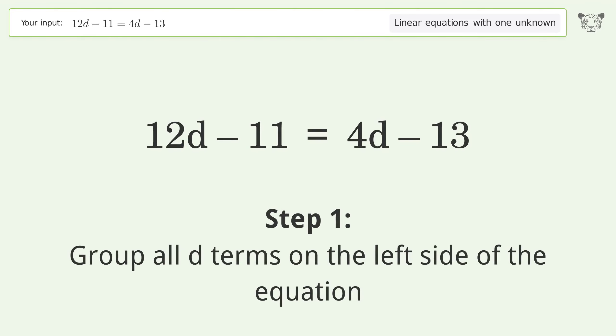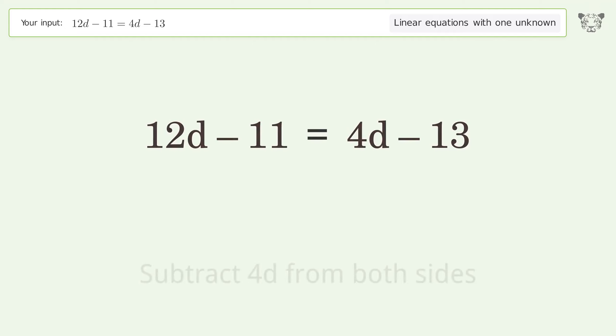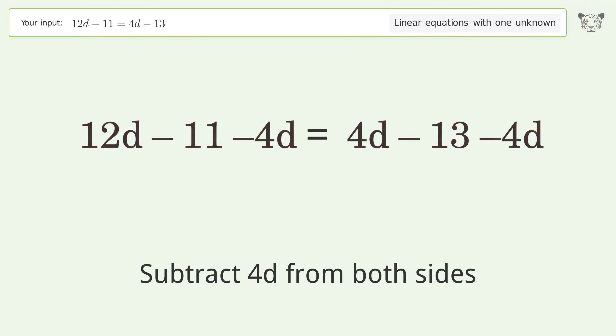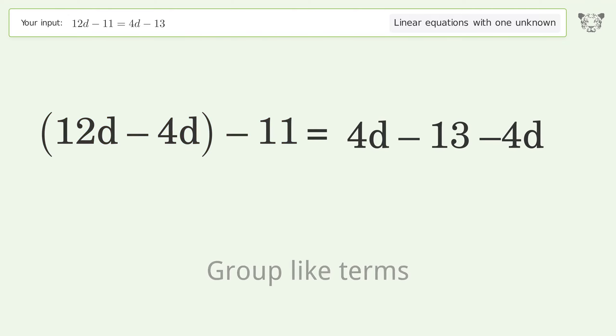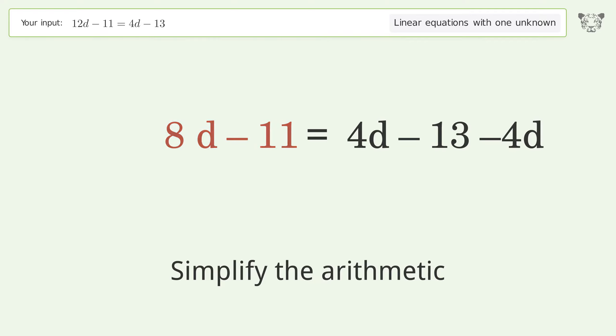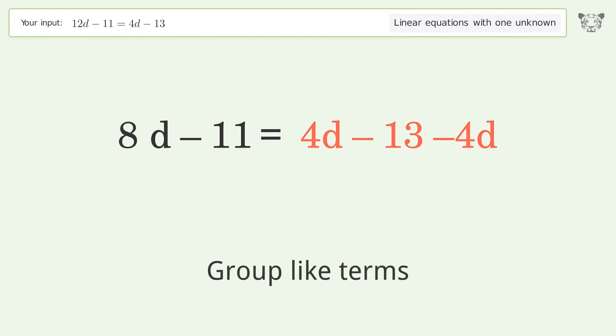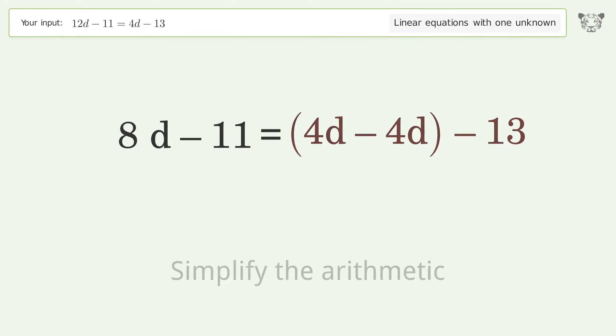Group all d terms on the left side of the equation. Subtract 4d from both sides. Group like terms. Simplify the arithmetic. Group like terms. Simplify the arithmetic.